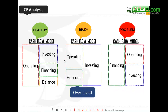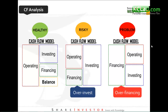The last model is the most problematic. Cash mainly comes from financing to cover both operating and investing, meaning operating cash flow is negative — the operation is generating losses. The company still wants to invest but relies on financing to do so. If this continues into the second and third year, the company may face bankruptcy. In Malaysia, such companies would be placed under PN17 before bankruptcy.